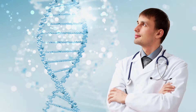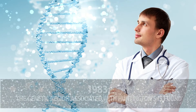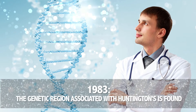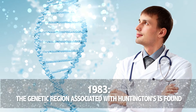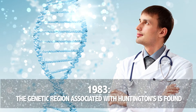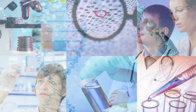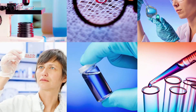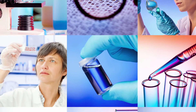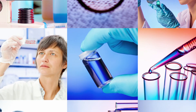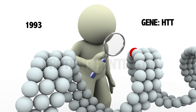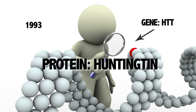In 1983, researchers located the genetic region associated with Huntington's disease. Ten years later, they identified the gene responsible and discovered the exact mutation. This gene was named HTT and the protein it produces was called Huntingtin.